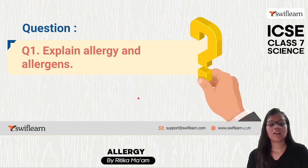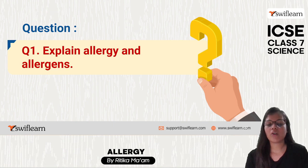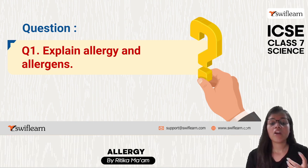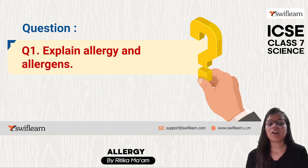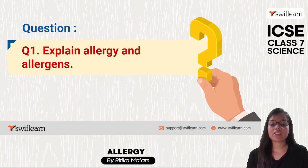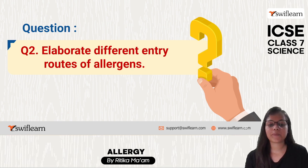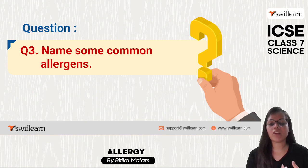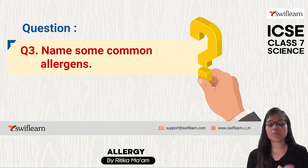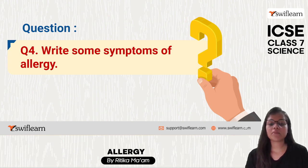To summarize: allergy is the discomfort we get from various things — sunlight, food products, and so on. Allergens are the substances through which allergy is created, such as sunlight, food products, dust, and pollen. Allergens can enter our body through the nose, mouth, and skin. Common allergens include pollen, milk, egg, fish, dust, and chemicals. Common symptoms of allergy include headache, runny nose, abdominal pain, and fever.